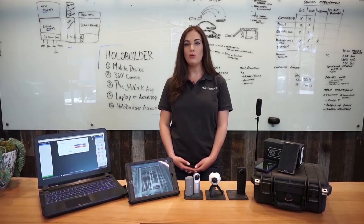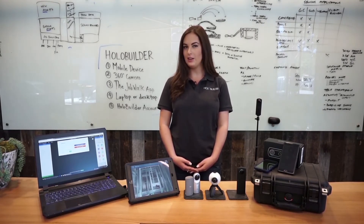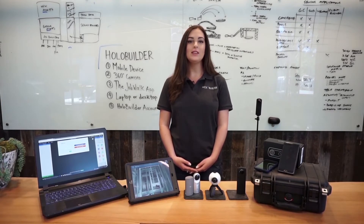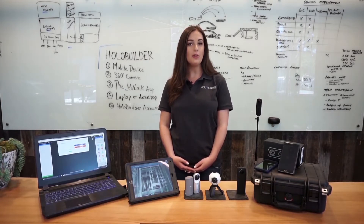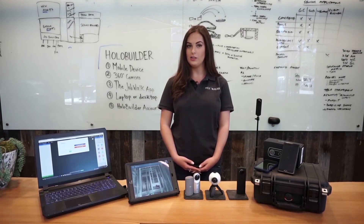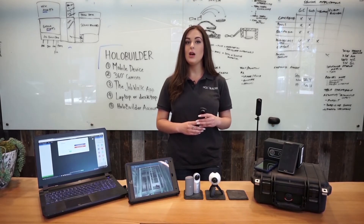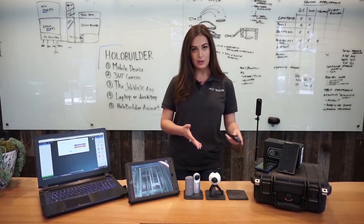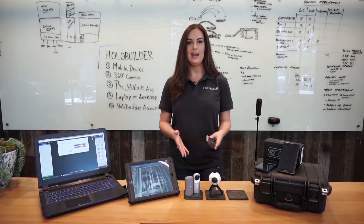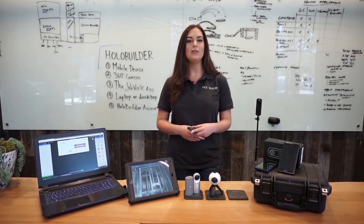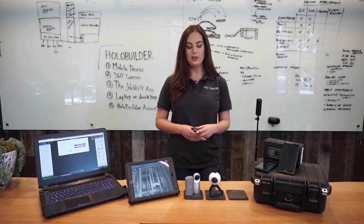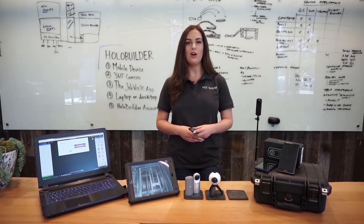The 360 camera. We work with fast point-and-shoot 360 degree cameras that do all the photo stitching inside the camera within seconds. This allows for very fast site documentation and comes at an affordable price point of around $300. We recommend the Ricoh Theta S due to its reliability and ease of use, but also work with the Samsung Gear 360 and the LG 360 camera. Either will do the job to get started with HoloBuilder. You can find links to all of these cameras on our website.